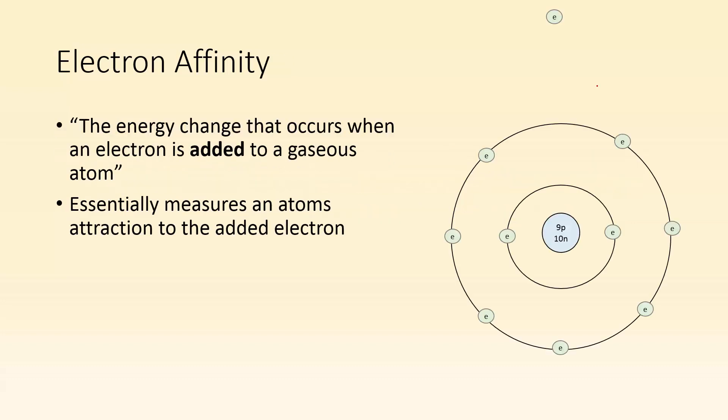Electron affinity, simply put, is the energy change that occurs when an electron is added to a gaseous atom. It's essentially the measure of an atom's attraction to that added electron. So here I have a neutral atom, and then I have an electron that I'm going to add to it. Electron affinity is, let me add an electron to that. How did the energy change? That's the electron affinity.